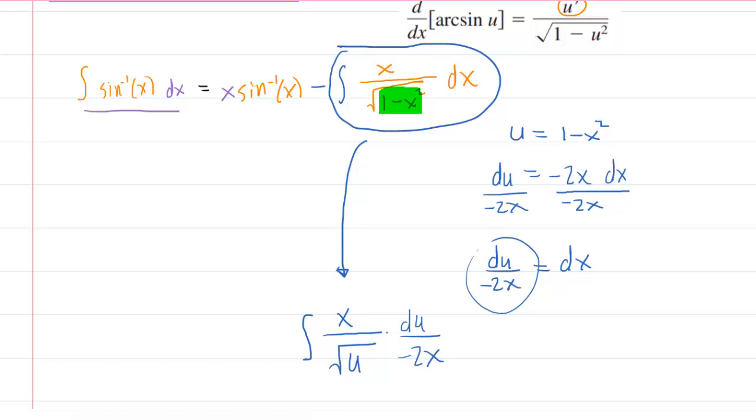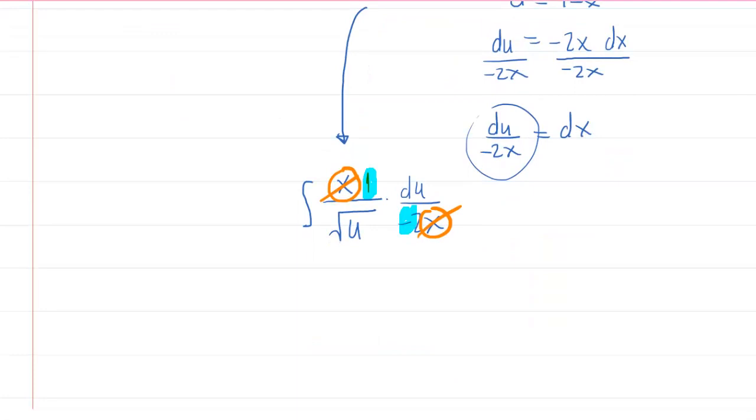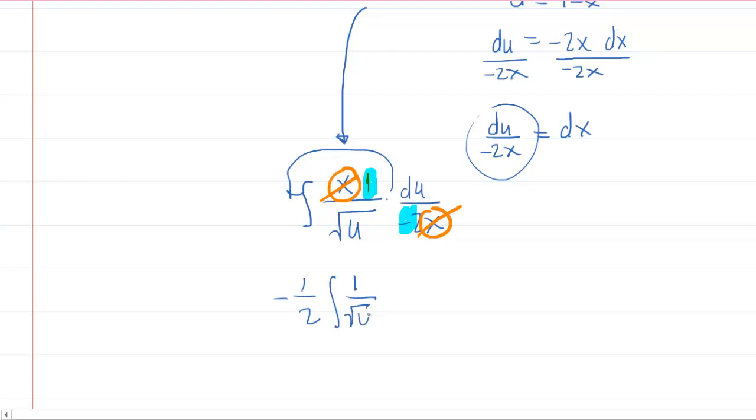Oftentimes, in u-substitution, your variable will cancel. So your variable x right here and here, one's in the numerator, one's in the denominator. They do, in fact, cancel. That would leave you with a 1 right here. And if you look very carefully, you would have a 1 over negative 2. So you can actually factor that constant to the outside. We're going to take that basically negative 1 half integral. And then notice we're left not with the square root of u, but with 1 over the square root of u.